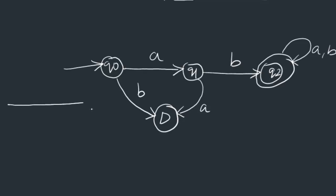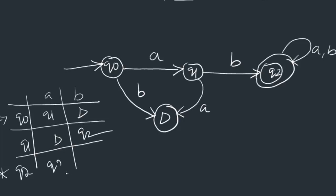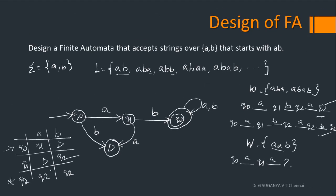Let's convert this into a transition table. The states are Q0 (start state), Q1, and Q2 (final state), with input symbols A and B. Q0 on A goes to Q1; Q0 on B goes to dead state. Q1 on A goes to dead state; Q1 on B goes to Q2. Q2 on A stays in Q2; Q2 on B stays in Q2. That completes the transition table.